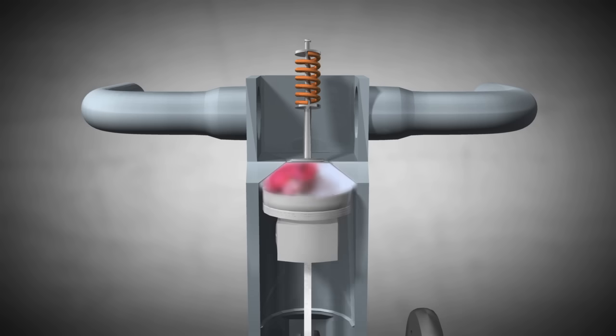At times of high RPM, for example on the highway, the atmospheric pressure will not push enough air into the cylinder. Consequently, the engine cannot run efficiently. Here, the turbocharger comes into play.